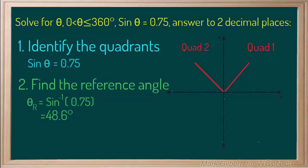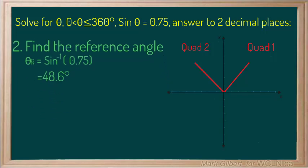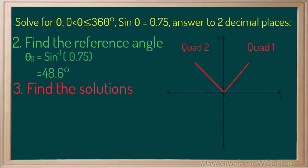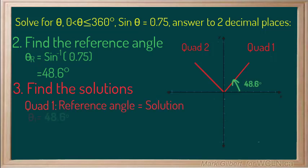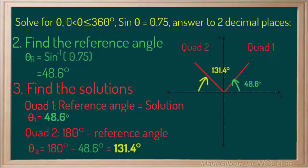The third step is to use the picture to find the solutions. Our first solution in quadrant 1 will be the reference angle. In fact, all of the solutions in quadrant 1 are reference angles because all angles are acute. The second solution in quadrant 2 will be a half circle, or 180 degrees, minus the reference angle. That gives us an answer of 131.4 degrees.